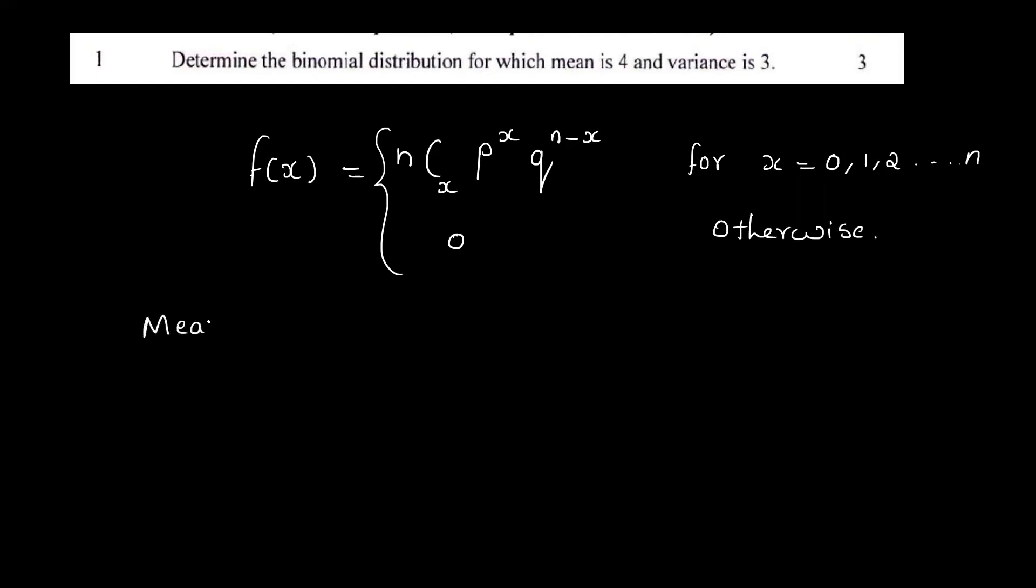This means the mean value. We have the mean denoted mu which is equal to np. Now, the variance is denoted sigma square. That means the equation is npq.